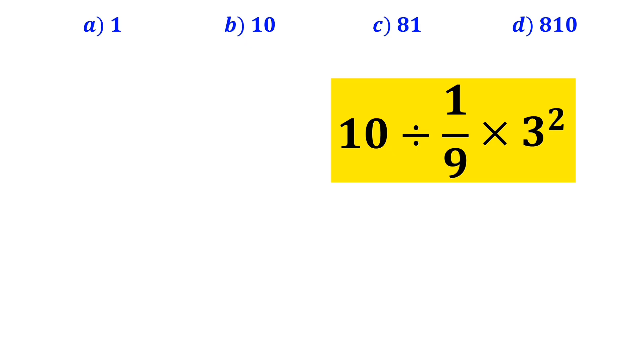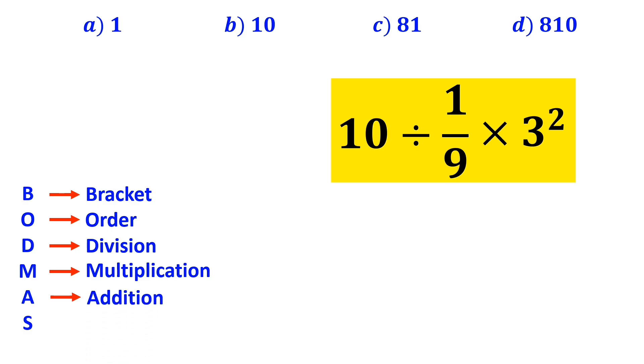To solve this question, we must follow the BODMAS rule. In this rule, B stands for bracket, O stands for order or exponent, D stands for division, M stands for multiplication, A stands for addition, and S stands for subtraction.